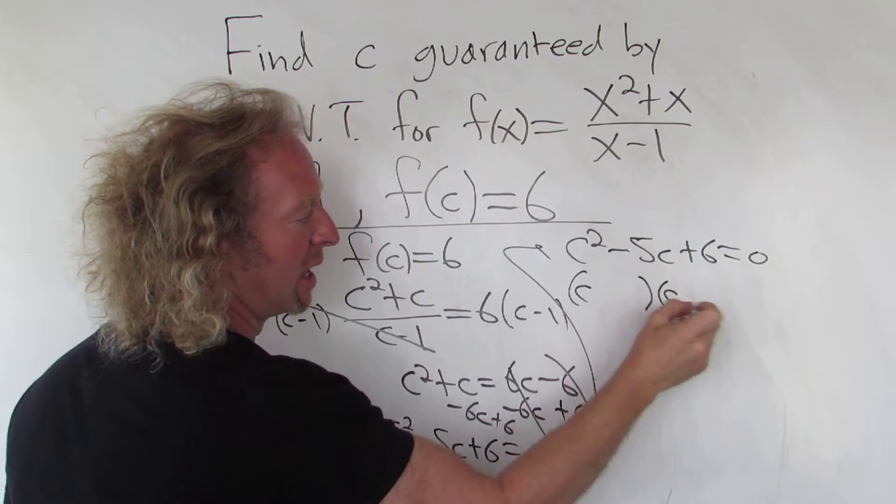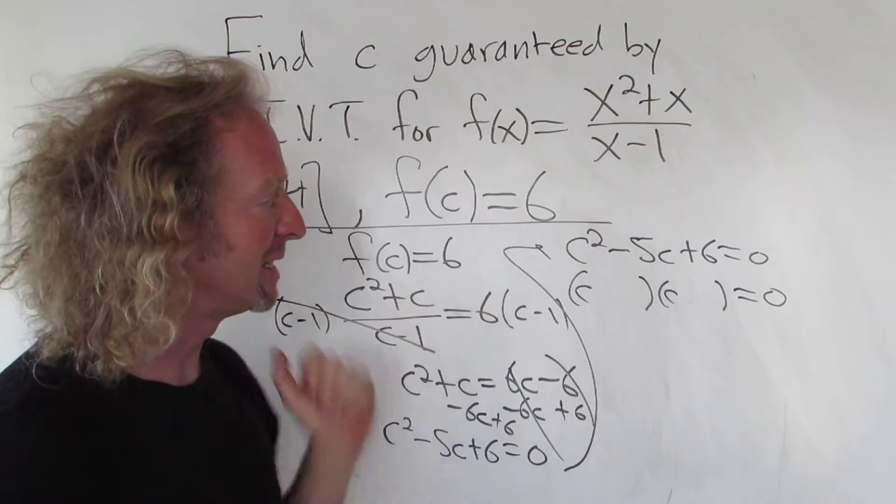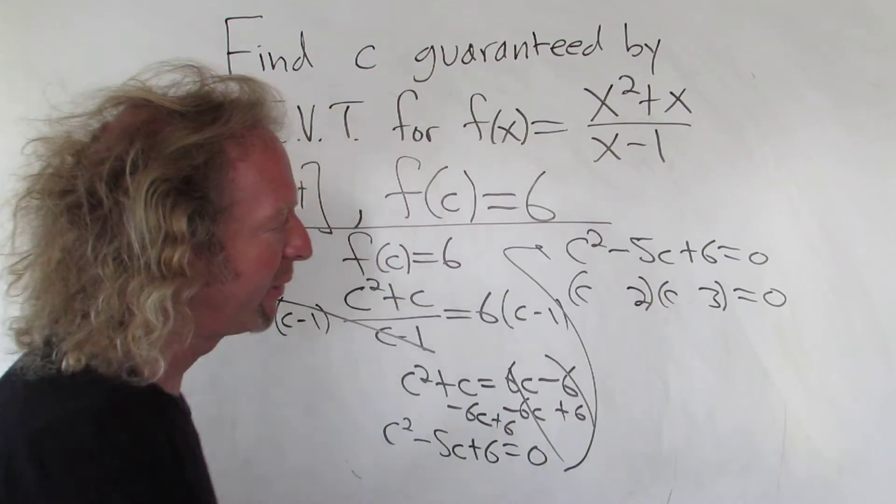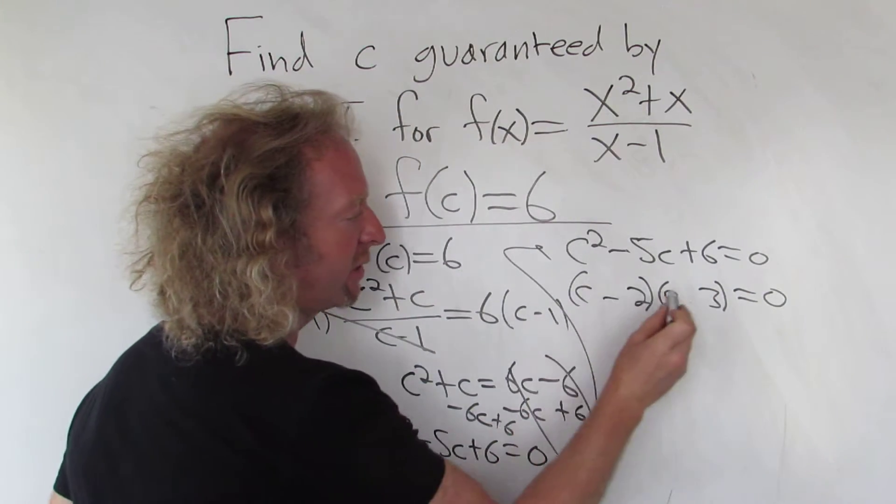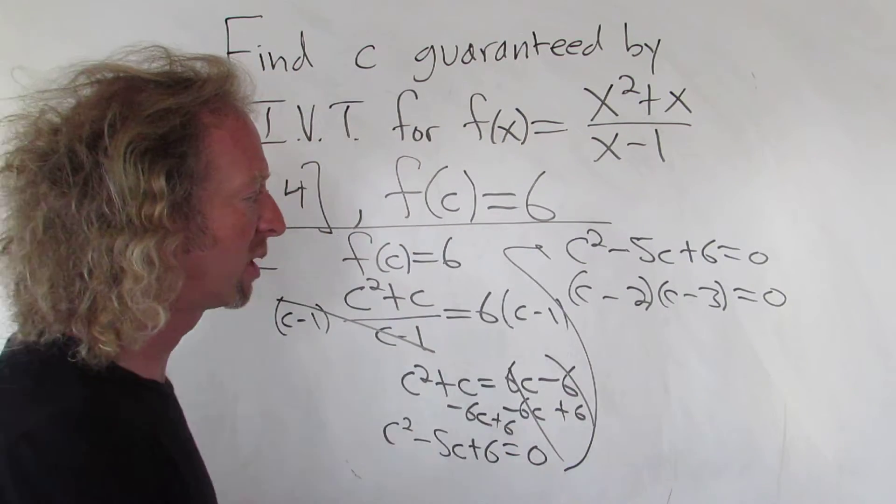So we need two numbers that multiply to 6 and add to negative 5. 2 and 3. 2 and 3. And I think they both have to be negative. Yeah, because negative 2 times negative 3 is positive 6. But if you add them, you get negative 5. So that should work.